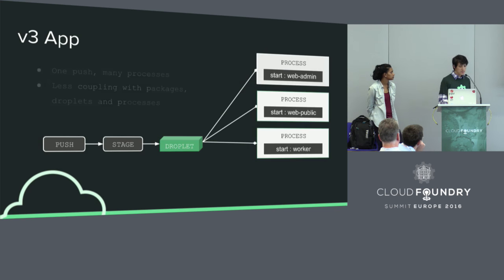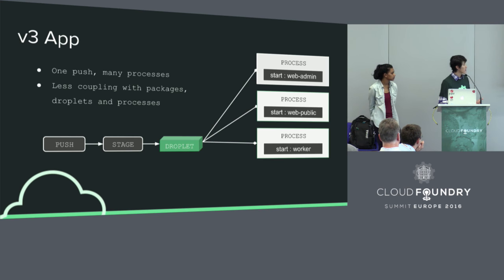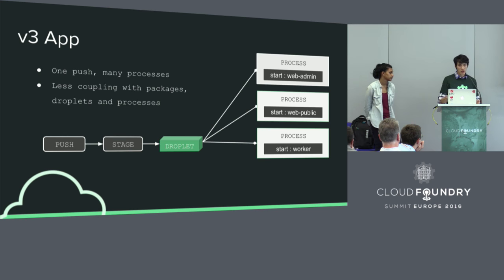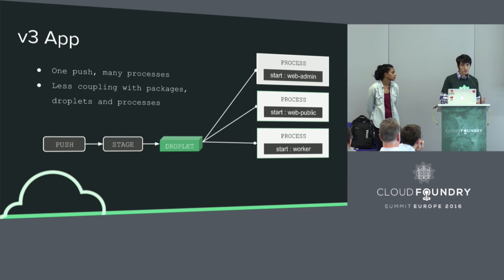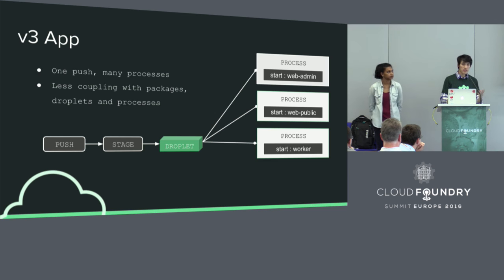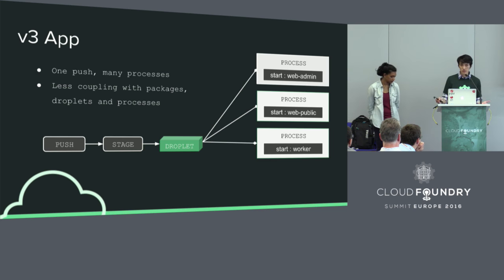What we really want is to do a single push and get many processes out of that, while breaking up all the tight coupling between the packages, the droplet, and the processes. To achieve that, we needed to re-architect Cloud Controller itself as a whole. The big benefit now is that we can interact with packages, droplets, and processes independently — because now they are their own entities. That opens the door to a lot of new features, such as blue-green deployments, which we can bake directly into the platform instead of relying on a third-party solution.